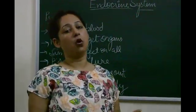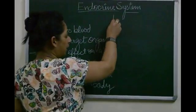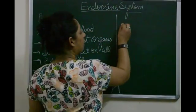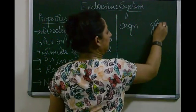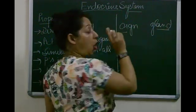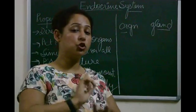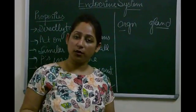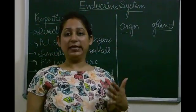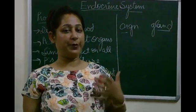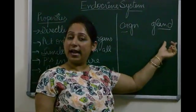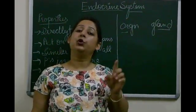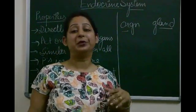First of all, before explaining the endocrine system, I want to make one thing very clear — what is the difference between an organ and a gland? Organs are parts of the body which do not produce any kind of secretions. For example, the heart is an organ, lungs are organs, and the brain is an organ.